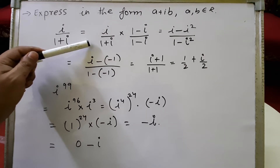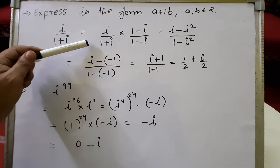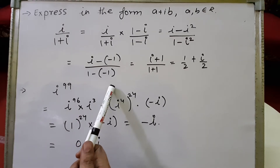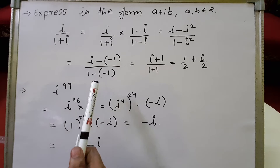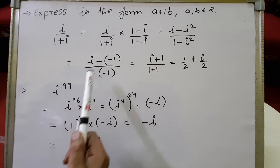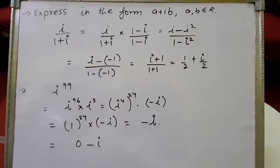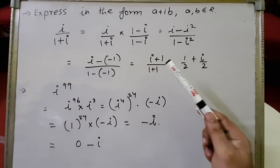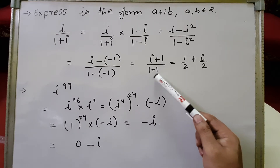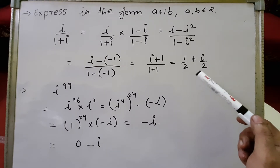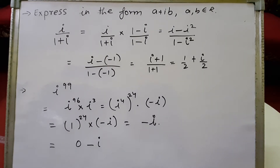In the denominator, 1 plus i into 1 minus i equals 1 minus i squared, using the difference of squares formula a plus b times a minus b equals a squared minus b squared. Substituting i squared equals minus 1, the numerator becomes i minus of minus 1, giving i plus 1, and the denominator becomes 1 minus of minus 1, giving 2. So we get one-half plus i over 2, meaning a equals one-half and b equals one-half.